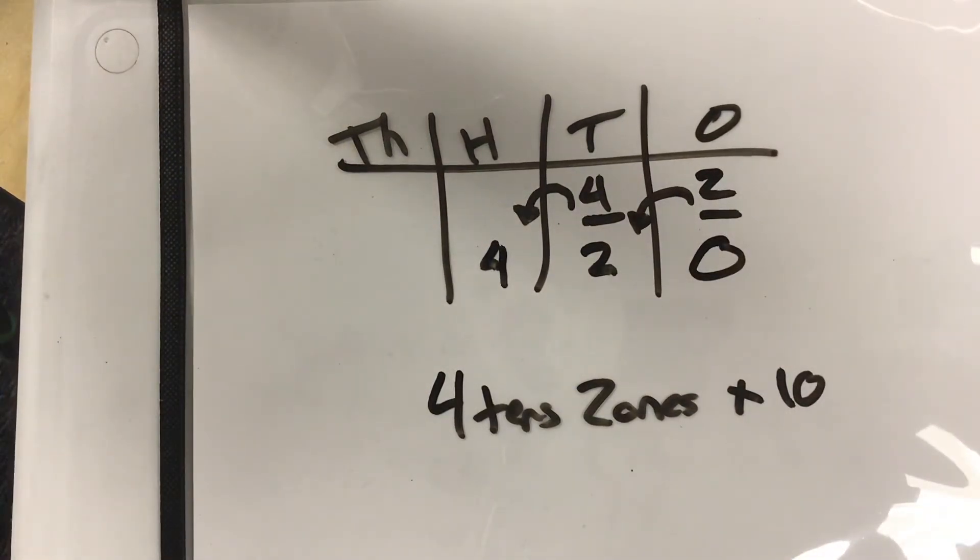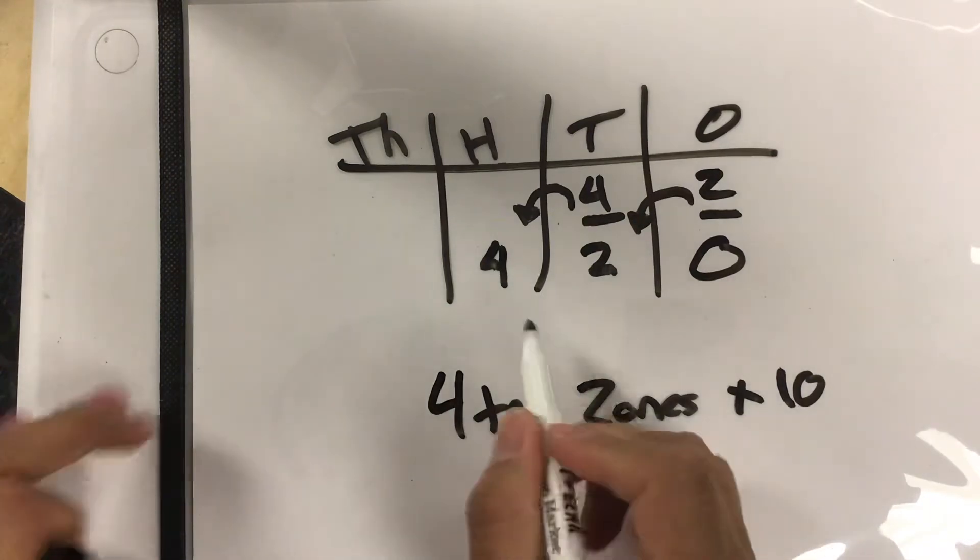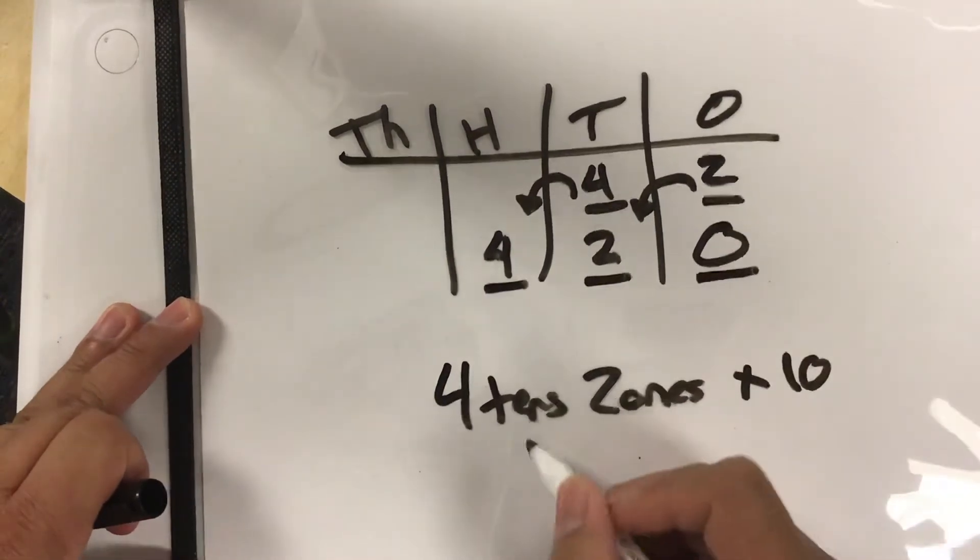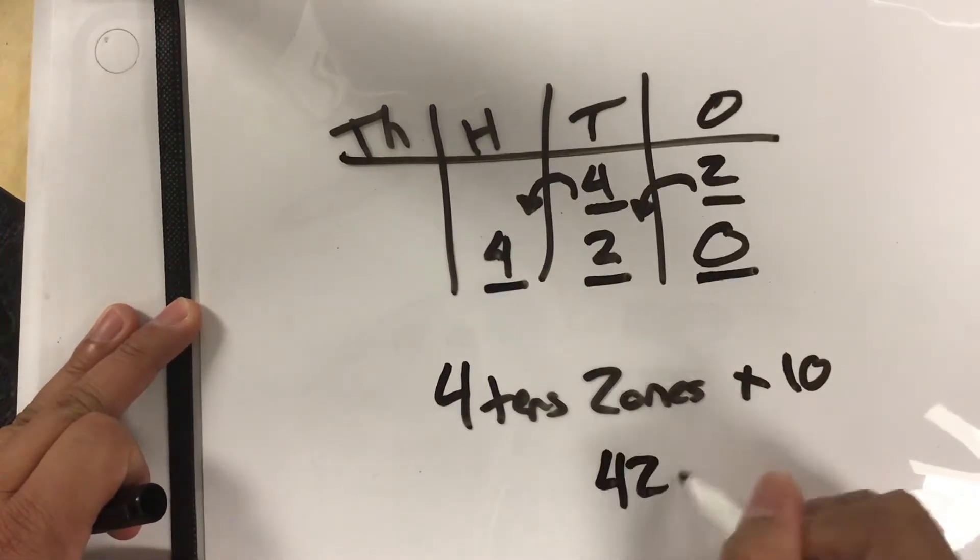So when we do four tens and two ones times 10, we end up with four hundreds, two tens and zero ones, which equals 420.